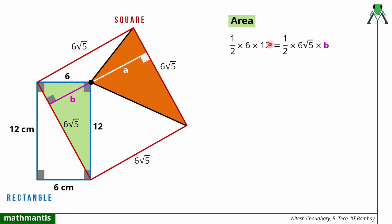Now we can see that half will get cancelled out, 6 will get cancelled out, b will become 12 by root 5. So that is the value of b. Now you know that a plus b is equal to 6 root 5. So we can easily find a which is nothing but